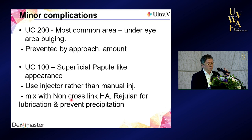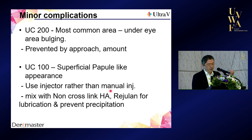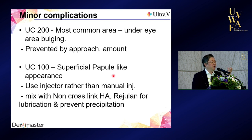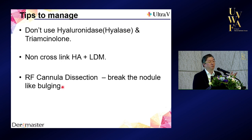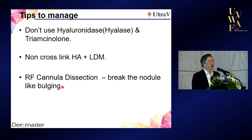You can inject non-cross-linked hyaluronic acid, and then do some LDM. If you have LDM, or you can inject more non-cross-linked hyaluronic acid, it will help it absorb faster. Also, if you have an RF cannula, you can break it up — I break everything after two sessions. The RF cannula is very helpful in case of any nodule-like formation. Thank you very much.